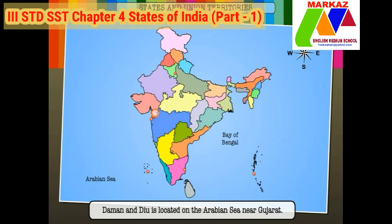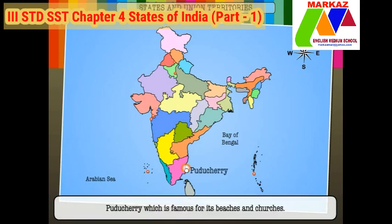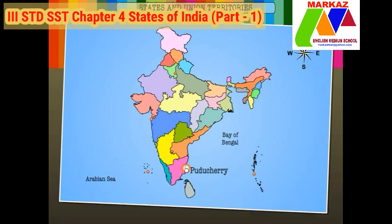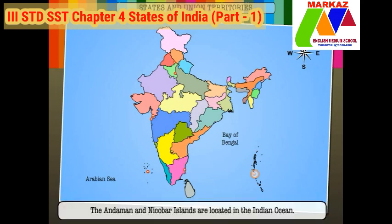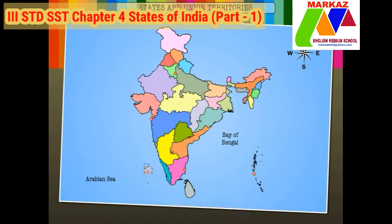Daman and Diu is located on the Arabian Sea near Gujarat; it is the second smallest union territory of the country. Puducherry is famous for its beaches and churches. The Andaman and Nicobar Islands are located in the Indian Ocean; the capital of this union territory is Port Blair. The Lakshadweep is located in the Arabian Sea; its capital is Kavaratti.